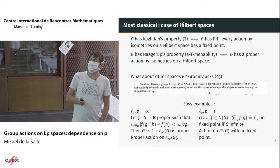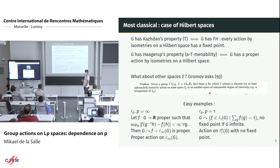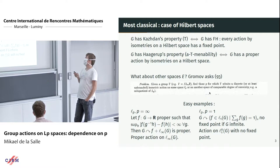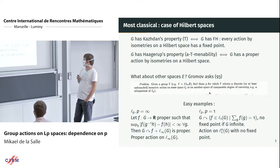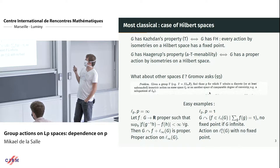The most classical example of a Banach space is Hilbert space. In that case we have Kazhdan's Property T, which by theorems of Delorme and Guichardet says every isometric action on a Hilbert space has a fixed point. The strong negation is Haagerup's property or Gromov's a-T-menability: not only does G have an action without a fixed point, but it has a proper action — the orbit map goes to infinity in norm as g goes to infinity in the group.